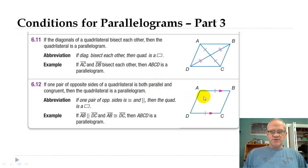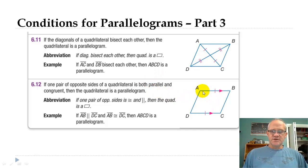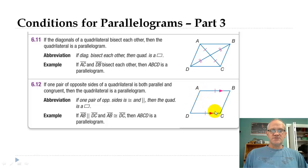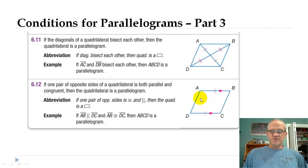Finally, this one we did not talk about last time: if two opposite sides are both parallel and congruent, then this also has to be a parallelogram. If you think about that — if these two sides are exactly equal and they're parallel, then these other two sides have to be parallel as well, and they will also be equal.